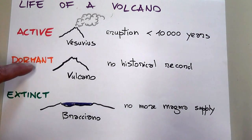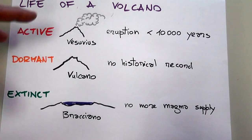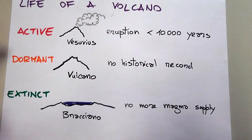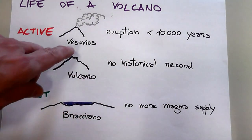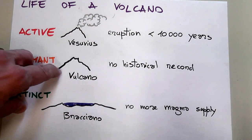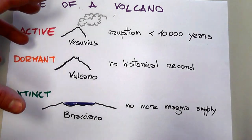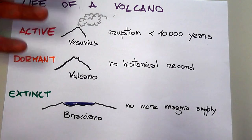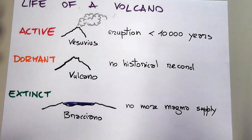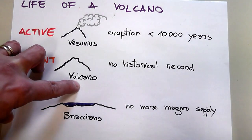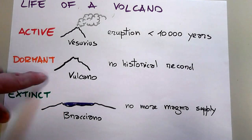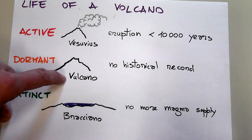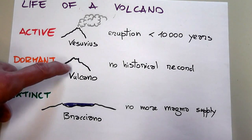A dormant volcano is a volcano which in principle can erupt at any time, but never did as long as there has been some civilization. So there's no historical record of an eruption of that volcano, but that doesn't mean it will not erupt. This is because of a different timeframe of geology and human civilization — geology works over hundreds of thousands or even millions of years. For instance, the island of Vulcano in Italy has a dormant volcano: a volcano that we know can erupt, but never did as long as there's been recorded history.